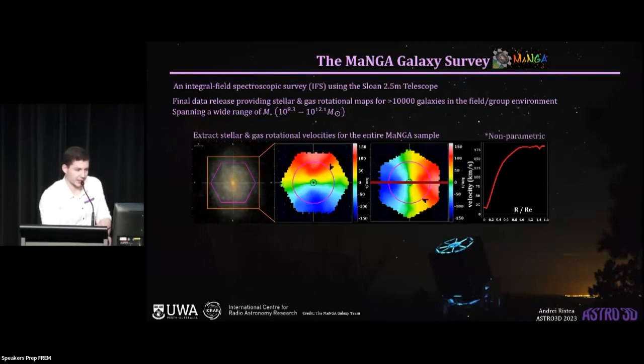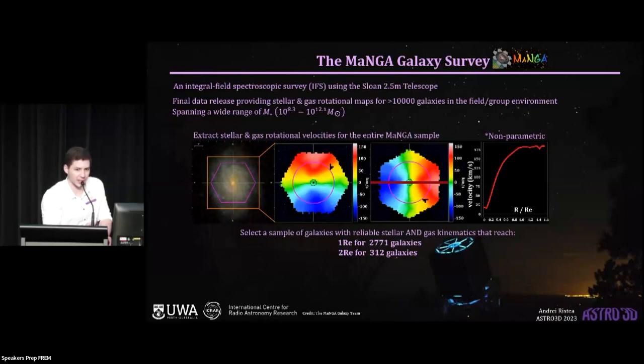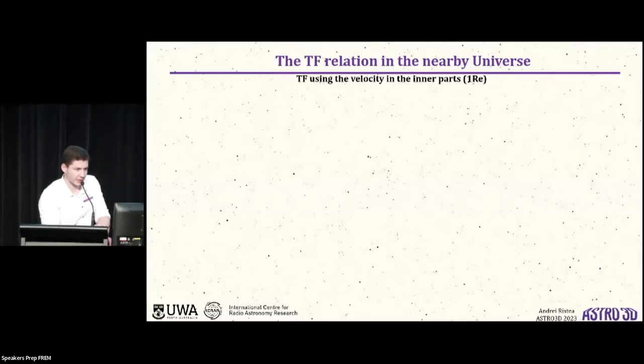Now, with this kinematic information available, what I do is I select a representative sample of galaxies with high-quality, reliable stellar and gas kinematics to work with, and all of these galaxies are, the kinematics of all of these galaxies are reaching at least one half light radius or RE. Right, so we can now go ahead and have a look at what the Tully-Fisher looks like for these galaxies.